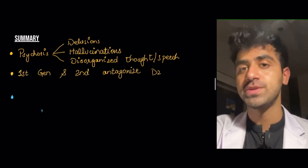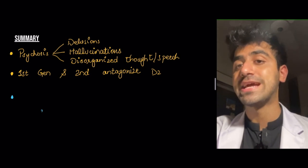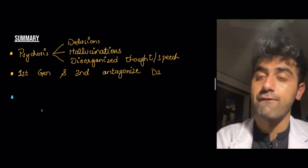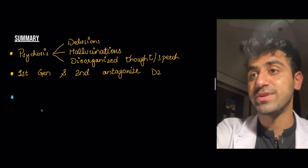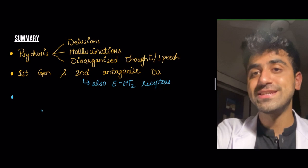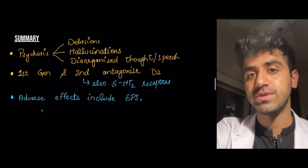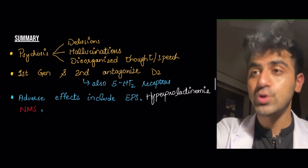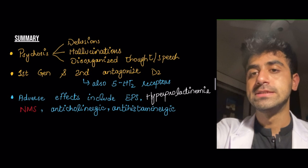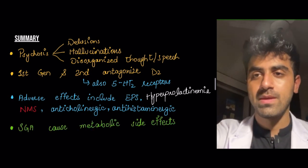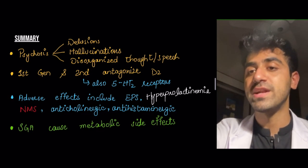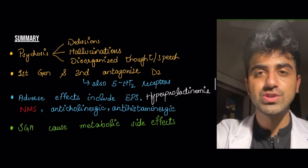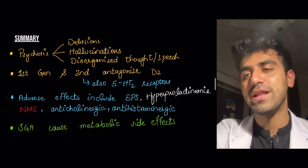Summary: psychosis has three components — delusions, hallucinations, and disorganized thought or speech. Both first and second generation antipsychotics antagonize D2 receptors, but also anticholinergic, antihistaminergic, and in second generation, anti-alpha adrenergic and anti-serotonergic 5-HT2A receptors. Adverse effects include extrapyramidal symptoms, hyperprolactinemia, neuroleptic malignant syndrome, anticholinergic and antihistaminergic effects, and for second generation, metabolic side effects. Thank you for watching.